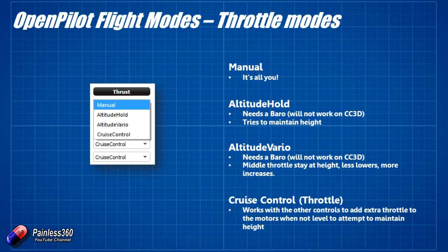Altitude vario is similar to altitude hold but changes the way the throttle works. With altitude vario, when the throttle is in the middle position you're telling the flight controller you want it to hold altitude. When it's below the middle throttle position you want it to sink, and above the middle position you want the craft to rise. Altitude vario can occasionally catch people out — it's very similar to equivalent modes on other flight controllers. We occasionally get messages from people saying their throttle feels really mushy, and typically it's because they have the equivalent of altitude vario turned on. When they turn it off, they get that manual directly-connected throttle feeling back.